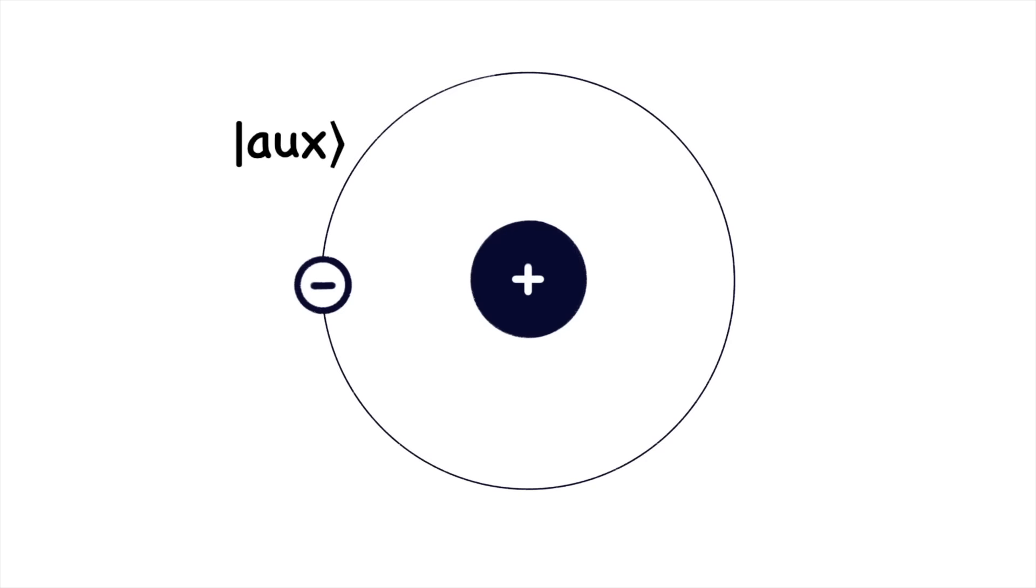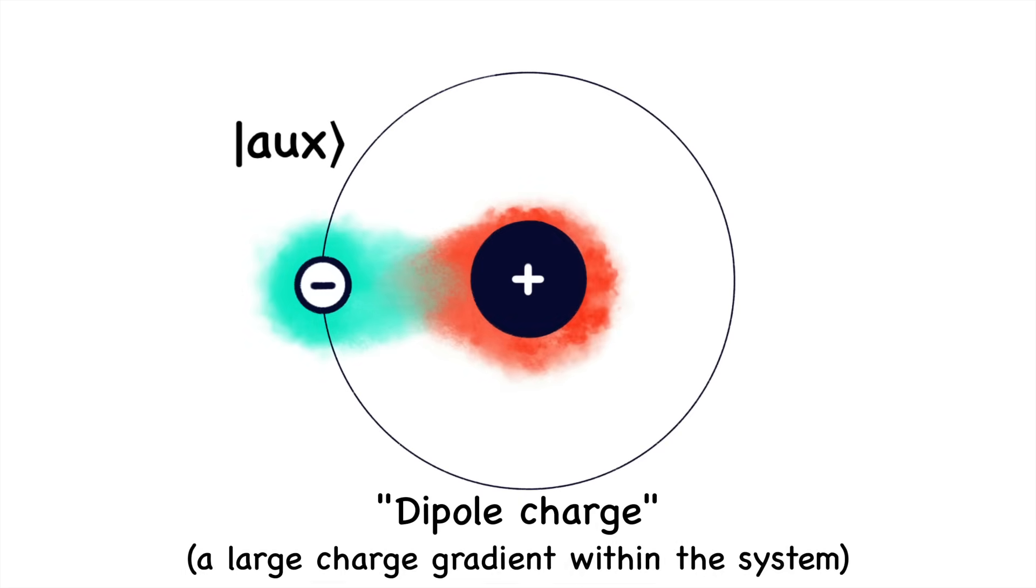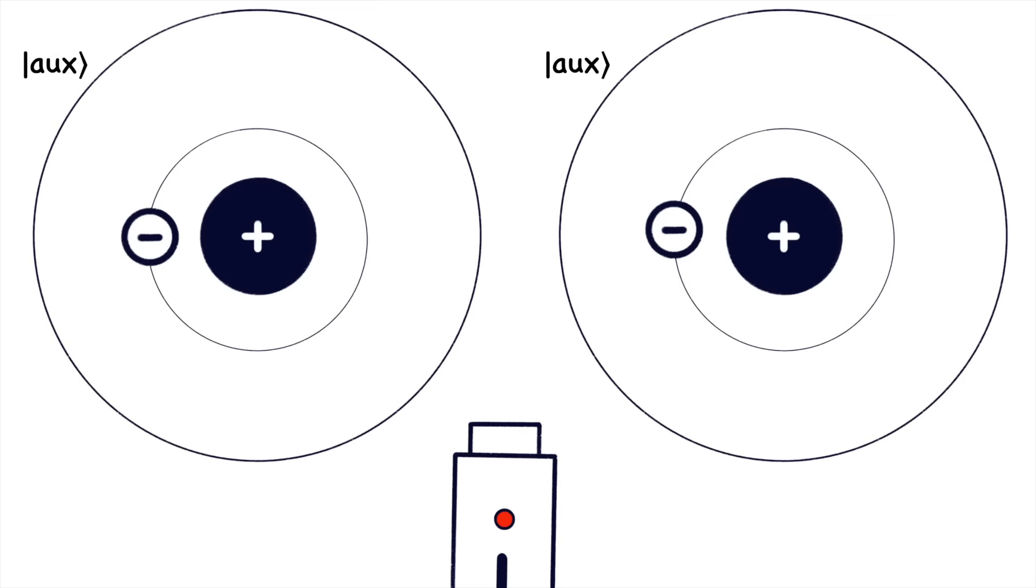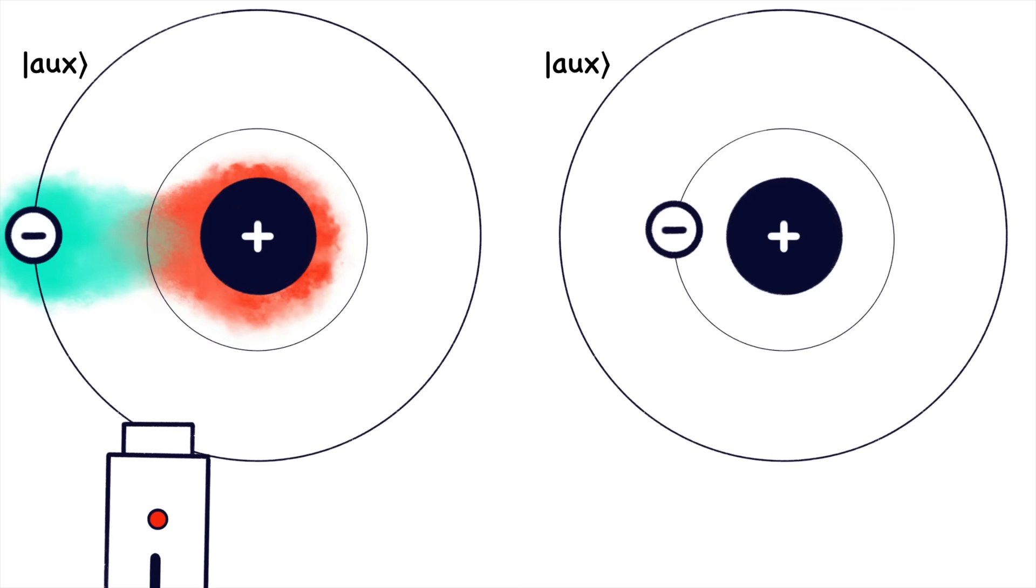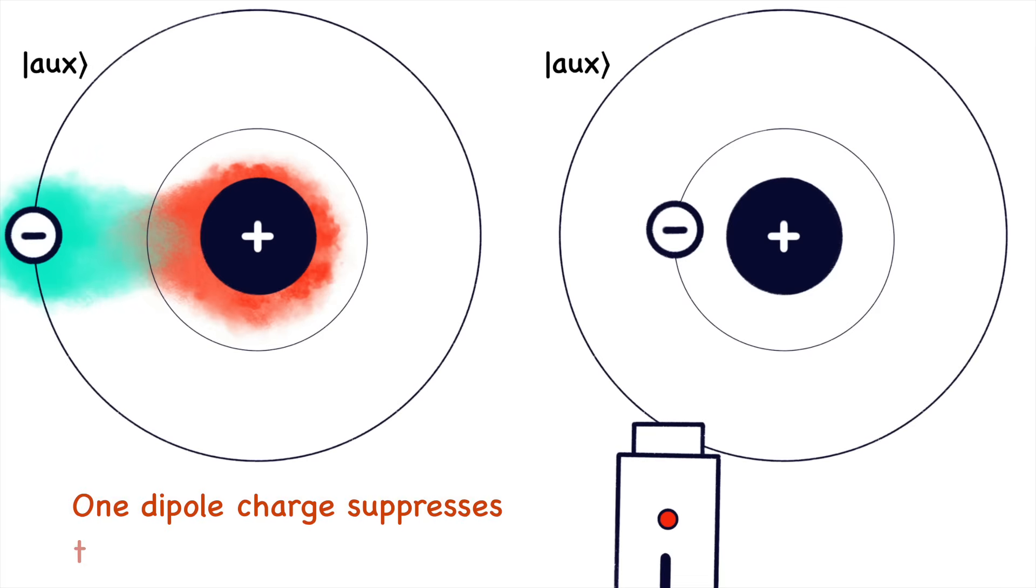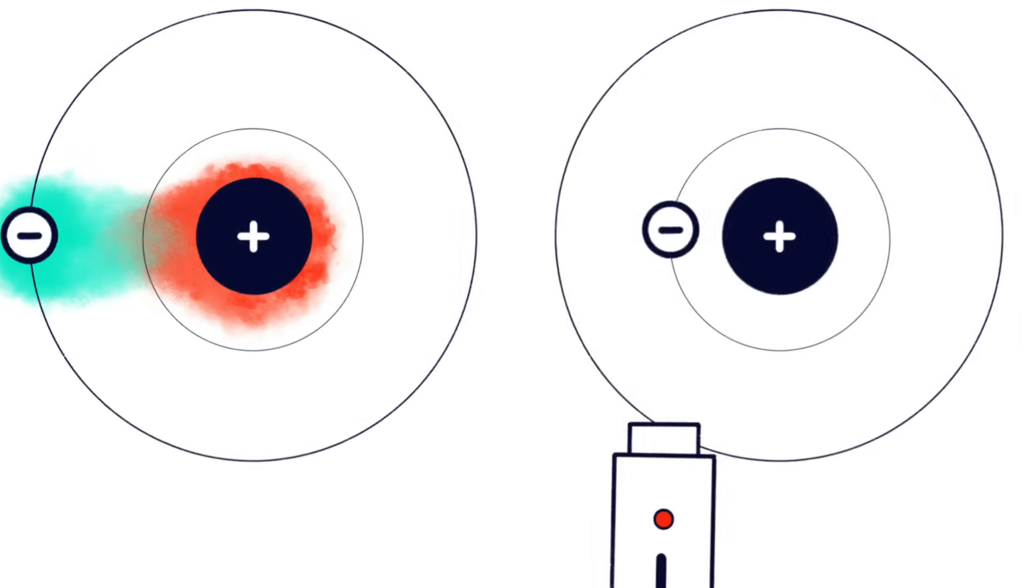Since the auxiliary state is very far away, the negatively charged electron in this state forms what is called a dipole charge with the positively charged core. As you may recall from high school, like charges repel each other. This means that when another atom is nearby, it becomes more difficult to also bring that atom into the dipole state. The charge distribution of the first atom increases the energy required to recreate the state in the second atom.